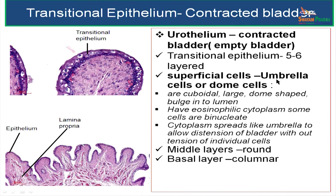Why is it called umbrella cells? It is because the cytoplasm spreads like an umbrella to allow distension of the bladder without tension of individual cells. The superficial cells are called umbrella cells. The intermediate layer has round or polygonal cells, 2 to 3 layers. Basal cells are columnar. In an empty bladder, transitional epithelium is 5 to 6 layered.